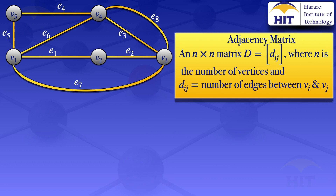The adjacency matrix is an n by n matrix D with elements d_ij, where n is the number of vertices and d_ij is the number of edges between v_i and v_j. Since we have five vertices, we will have a 5 by 5 adjacency matrix, with vertices v1, v2, v3, v4, and v5 on both rows and columns.